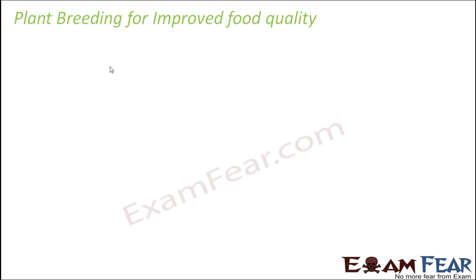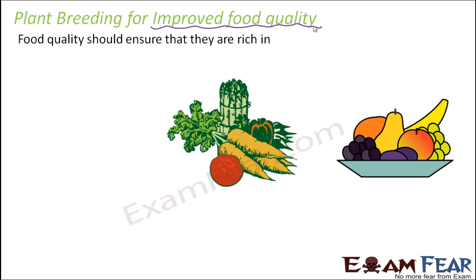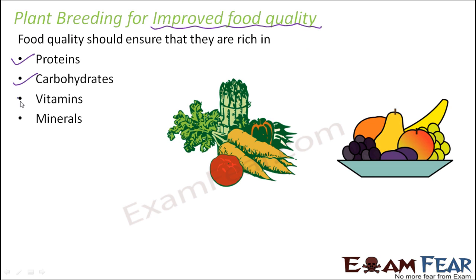Now, how do we handle plant breeding for improved food quality? By food we understand all the fruits, vegetables, etc. that we get from plants. We eat food so that our body can get all the necessary nutrients needed to perform all life processes. If food doesn't contain nutrients, it is not going to help. Food quality should ensure that crops are rich in essential nutrients — like proteins, carbohydrates, vitamins, and minerals — which are needed by our body for survival.